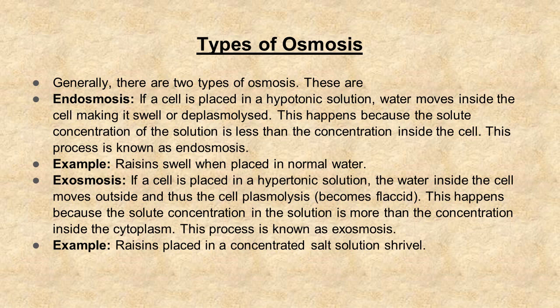Example of endo-osmosis: raisins swell when placed in normal water. Exo-osmosis: if a cell is placed in a hypertonic solution, the water inside the cell moves outside and thus the cell undergoes plasmolysis. This happens because the solute concentration in the solution is more than the concentration inside the cytoplasm. This process is known as exo-osmosis. Example: raisins placed in a concentrated salt solution shrivel.